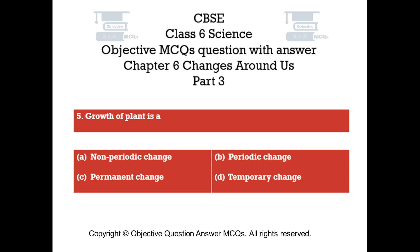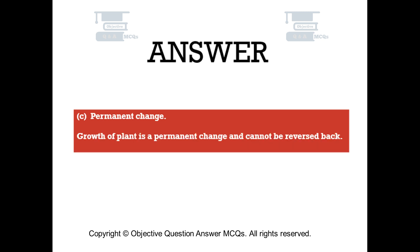Question number 5. Growth of plant is: Option A, non-periodic change. Option B, periodic change. Option C, permanent change. Option D, temporary change. The right answer is option C — permanent change. Growth of a plant is a permanent change and cannot be reversed back.